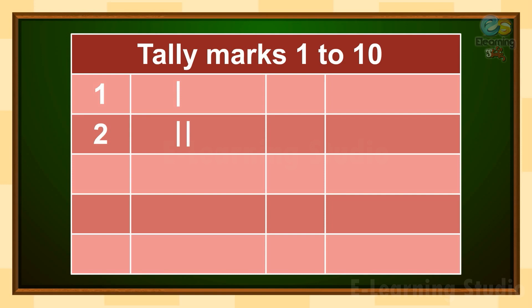For number 3, we have to draw 3 tally marks: 1, 2, 3. Now to represent number 4, what will we do? Think! Yes, we have to draw 4 vertical lines: 1, 2, 3, 4.